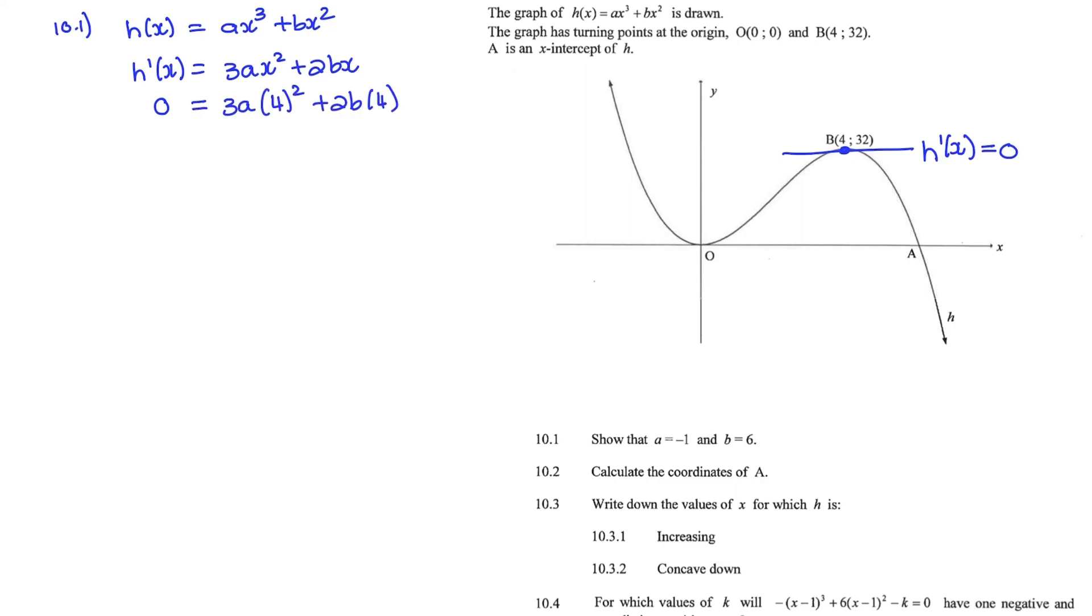We also know that at point B, the x value is equal to 4. So that allows me to find an equation for A and B. So 3A times 16 is 48A plus 2B times 4, which is 8B. And I can divide everywhere by 8. So that is 0 equals 6A plus B. That is my first equation.